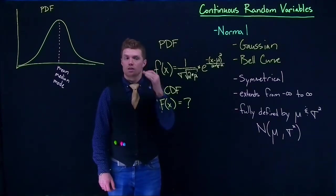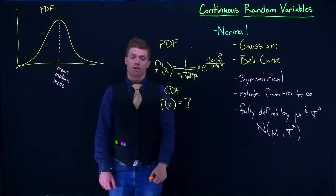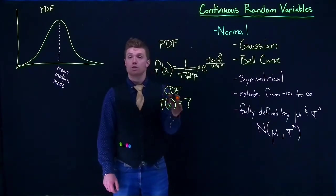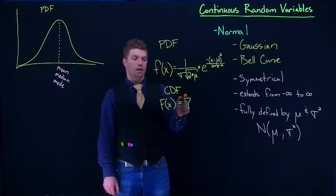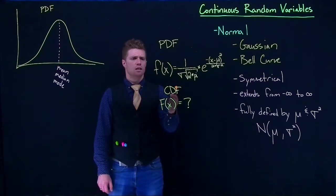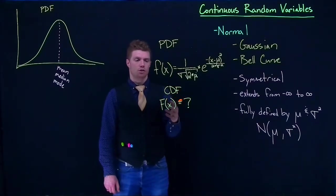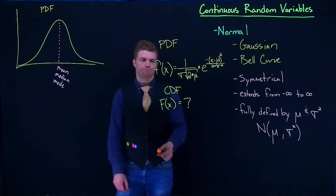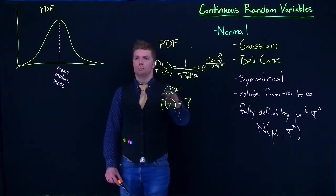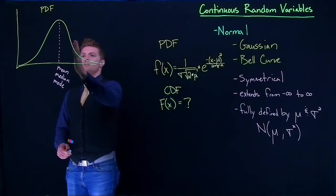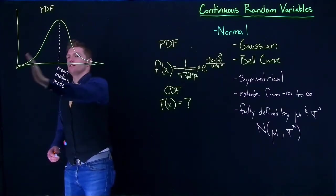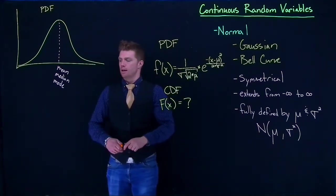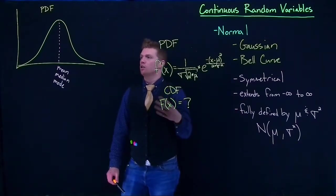What we actually wind up doing is the computers can use numerical methods to basically approximate what this area is. So we're going to rely a lot upon the CDF in the software so that we can calculate out these probabilities. Traditionally, we'd basically use tables, like printed out sheets of tables to try to kind of get close to what these probabilities are. But since we've got software, we can be a lot more accurate.